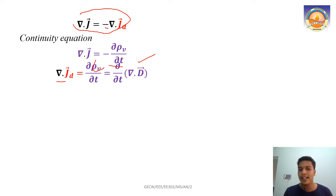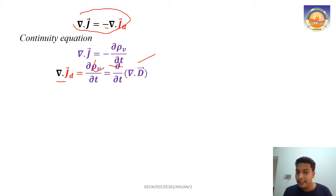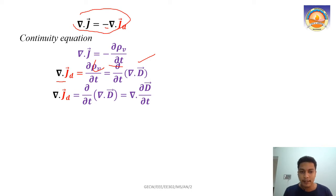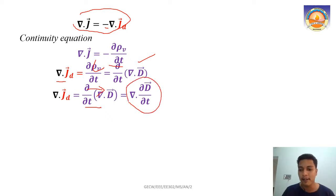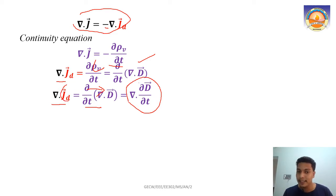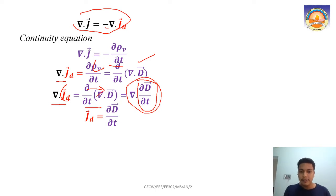From the first Maxwell's equation, del dot D equals ρv, so ρv can be substituted with del dot D. Therefore del dot Jd equals ∂/∂t (del dot D). Since the del operator acts on space and ∂/∂t acts on time, we can bring the time derivative inside: del dot Jd equals del dot (∂D/∂t). Because the same del operator applies on both sides, Jd must equal ∂D/∂t.